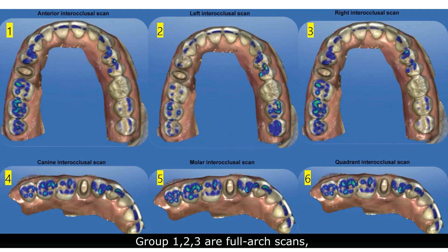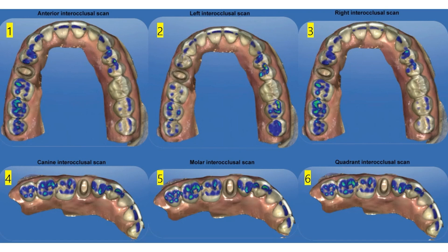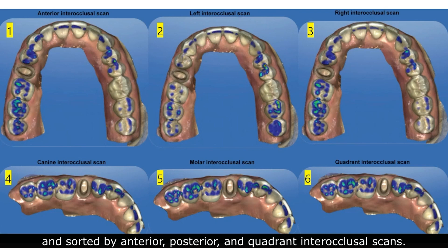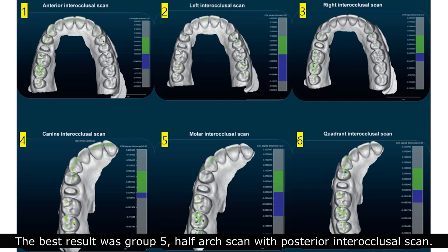Groups 1, 2, and 3 are full-arch scans aligned by anterior, left, and right inter-occlusal scans. Groups 4, 5, and 6 are half-arch scans sorted by anterior, posterior, and quadrant inter-occlusal scans. The best result was Group 5 — half-arch scan with posterior inter-occlusal scan.